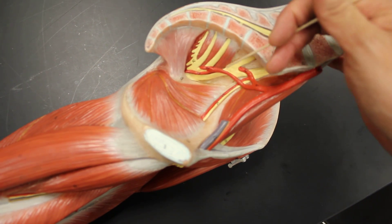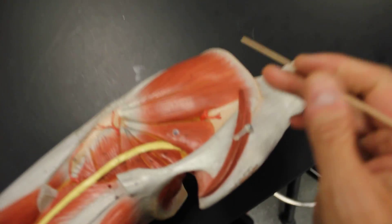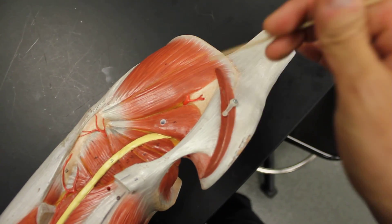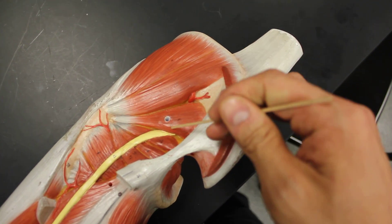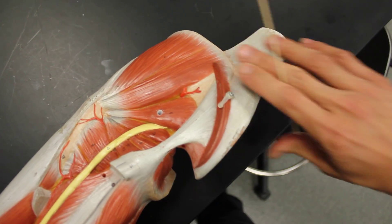The internal will have multiple branches, one of which we'll take a look at on the posterior side. We can actually see here, this would be considered the gluteal, or specifically the superior gluteal artery. We don't see the inferior. Inferior would come below piriformis here.